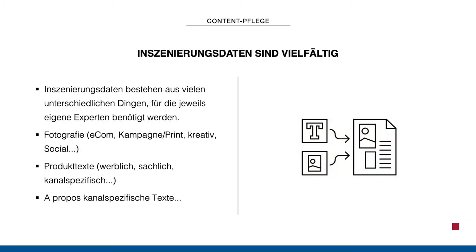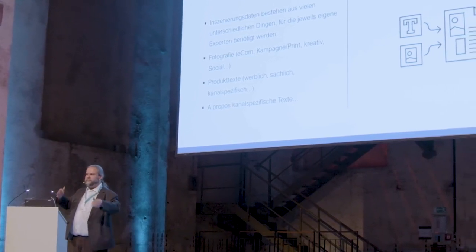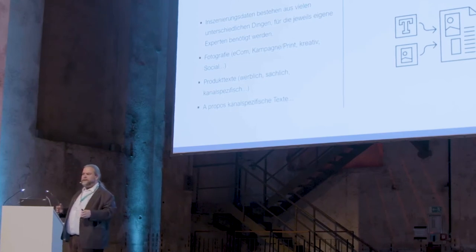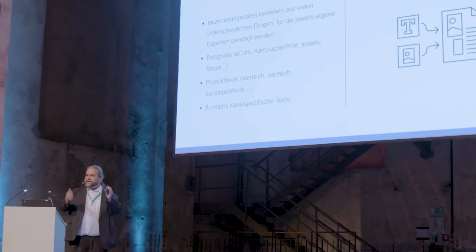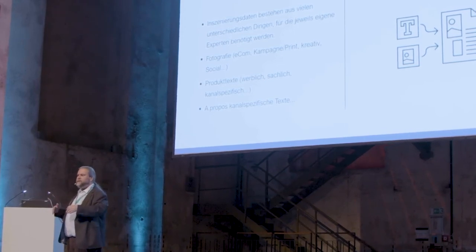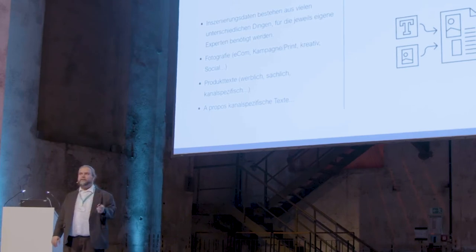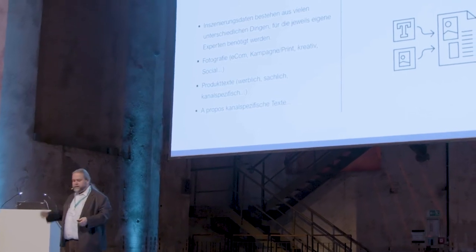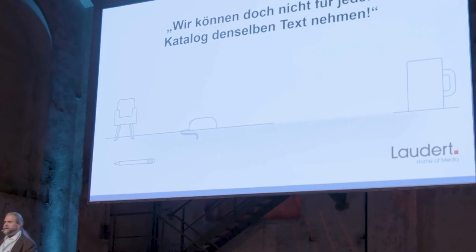Talking about staging data — this is so diverse because it includes images and text. Even if I only talk about photography, there is typical e-commerce photography, then creative photography, ambience photography — different briefing required, different people who have to look at it and like it or not. For text it's the same: I have technical texts that have to be checked for plausibility, then advertising texts — how much storytelling do I want to include? Then you have channel-specific or context-specific texts. One thing I keep seeing, regardless of how many times you want to kill it: channel-specific texts. We cannot use the same text for each catalog — the layout differs each time.